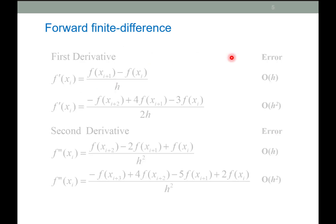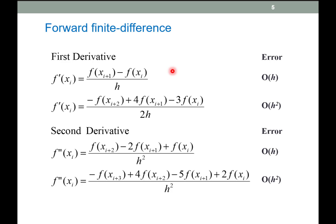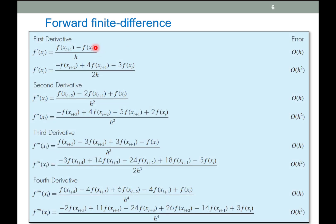What we're doing here is showing how to find more accurate equations for the first derivative. Applying the same approach, we can also get a more accurate term for the second derivative. In general for this course, you don't need to derive anything — it will be given to you. We have equations for the first, second, third, and fourth derivatives, and as accuracy increases, more points are needed.